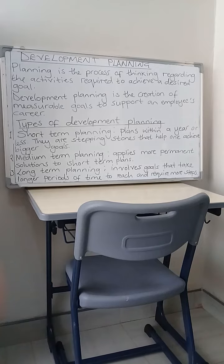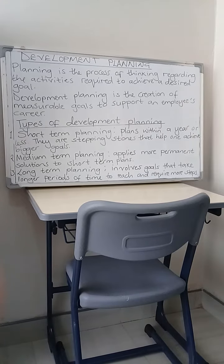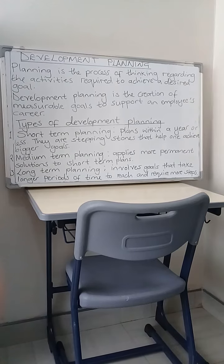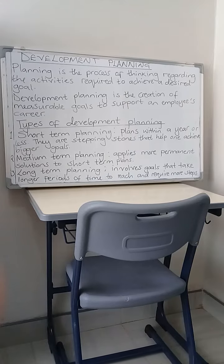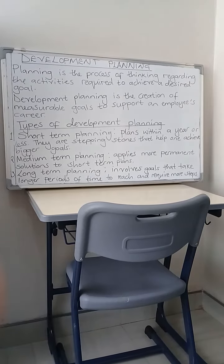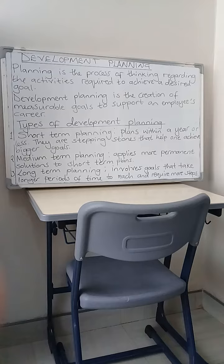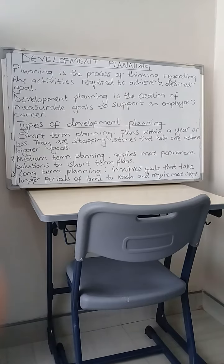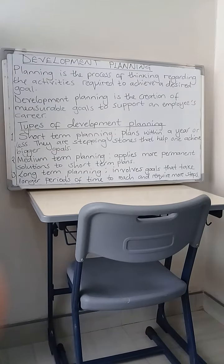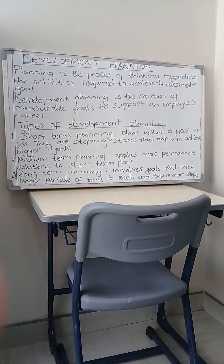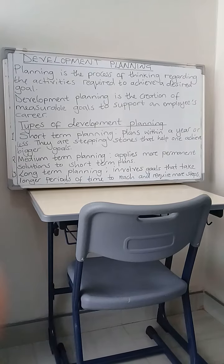Long-term plans involve goals that take longer periods of time to reach and require more steps. Long-term plans take considerable time — they might take two years, three years, five years, ten years, and sometimes even twenty years. These are long-term plans that require more steps to be achieved.